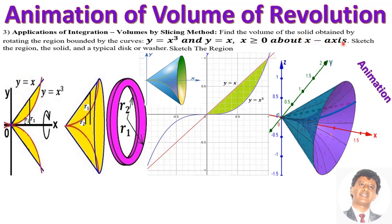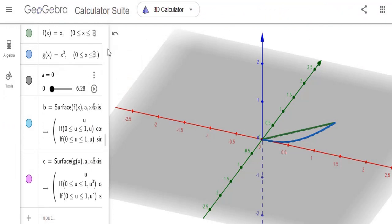The region is rotated about the x-axis. The top curve is y equals x and the bottom curve is y equals x cubed. This is the region, and when rotated around the x-axis it forms a solid. This is the volume that is generated, and that's how it looks.